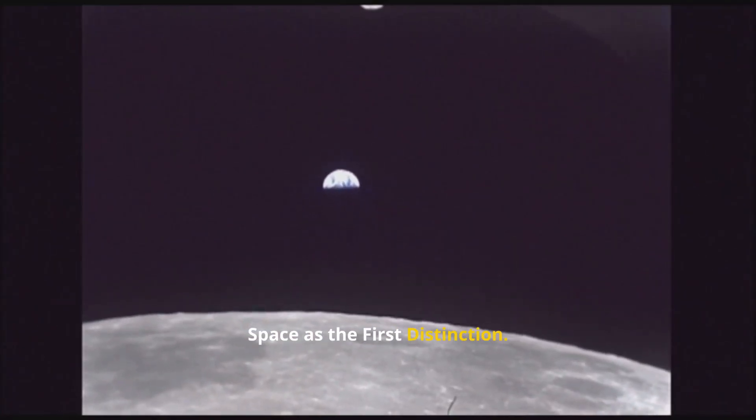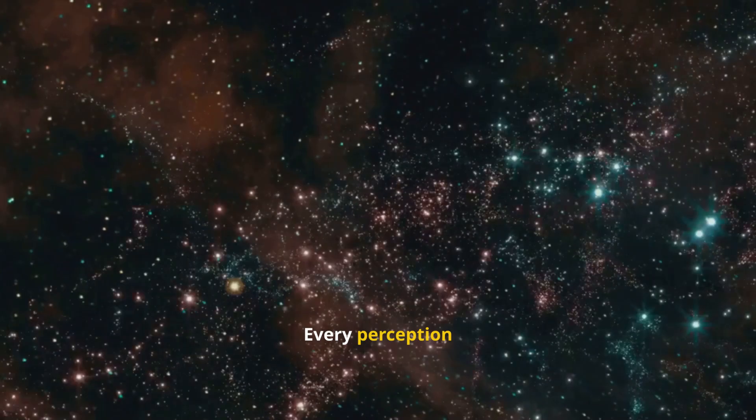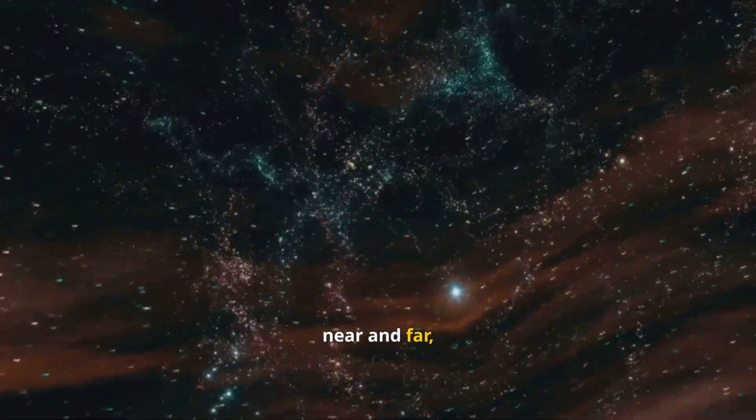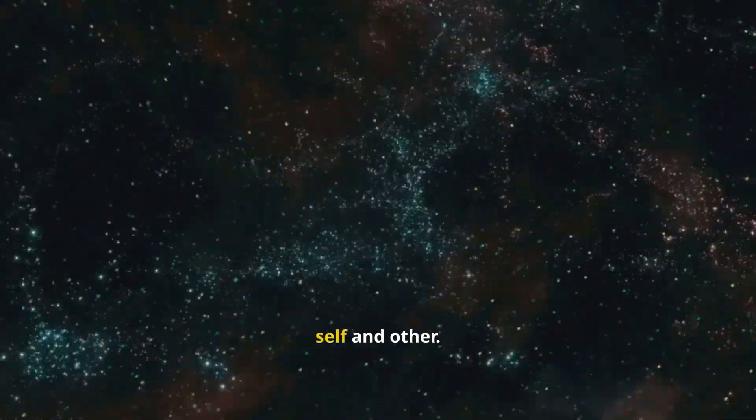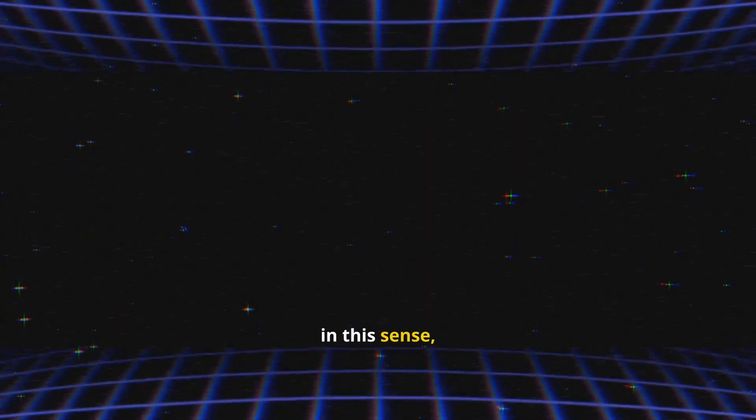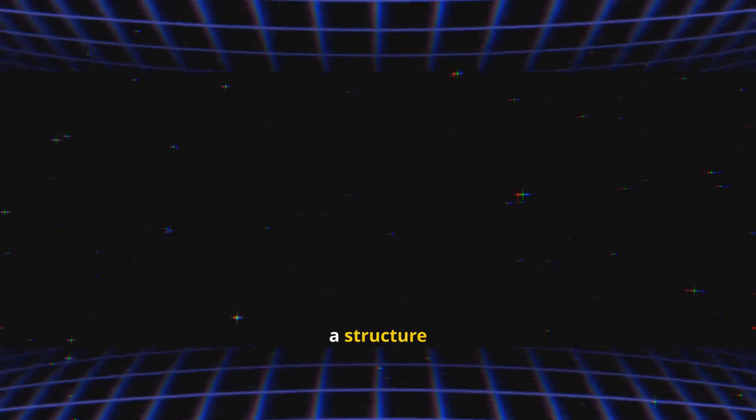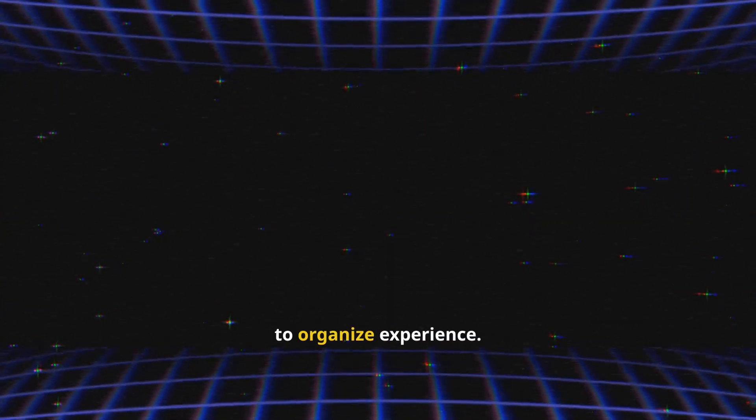Space as the first distinction. Every perception begins with difference between near and far, subject and object, self and other. Space, in this sense, is not a substance but a relation, a structure consciousness uses to organize experience.